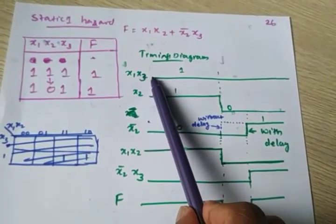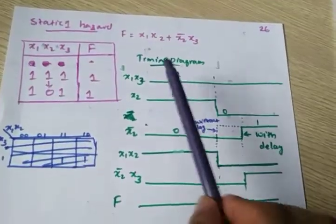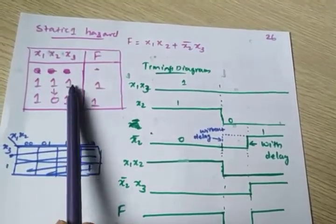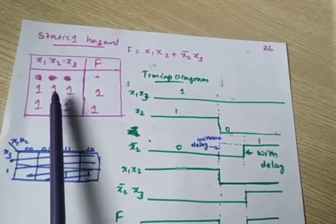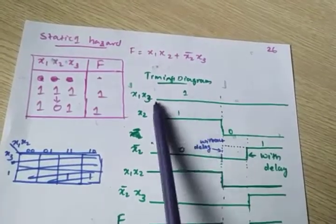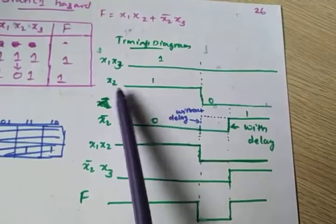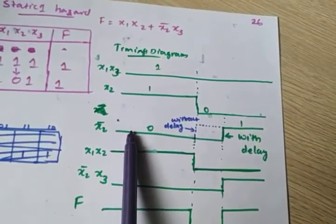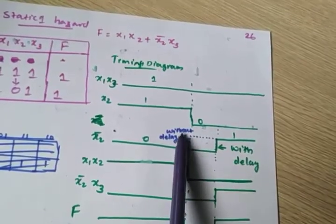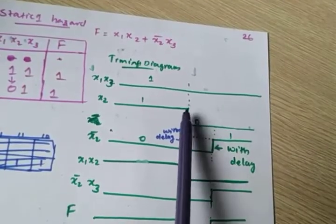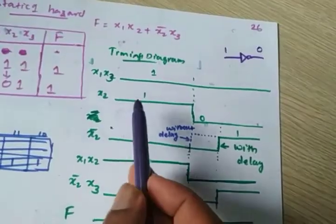How to draw the timing diagram. X1 and X3 are always 1. X2 I am changing — it is 1 to 0. X2-bar is the opposite of this. X2 is given to a NOT gate, and the NOT gate has a propagation delay. So when X2 is 1, the NOT gate output is 0. When this 1 becomes 0 — immediately X2-bar should go to 1, but due to propagation delay, it won't happen immediately. After a time delay, it goes to 1. This is the propagation delay.